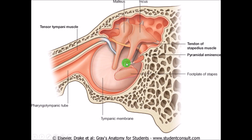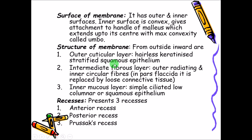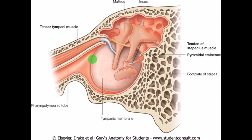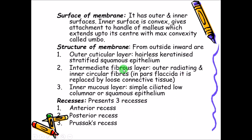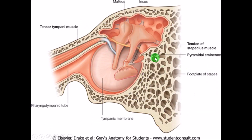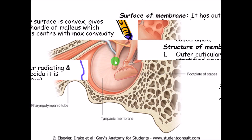In the picture shown from inside, you can see the malleus itself, the handle of the malleus, the incus and stapes. You can see fibers radiating towards the handle. The inner surface is convex, and it gives attachment to the handle of the malleus.